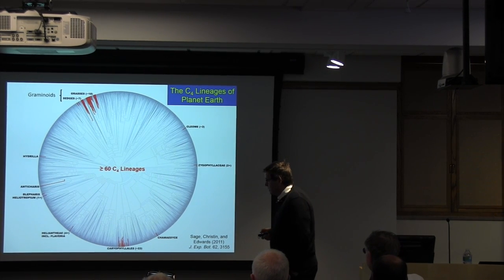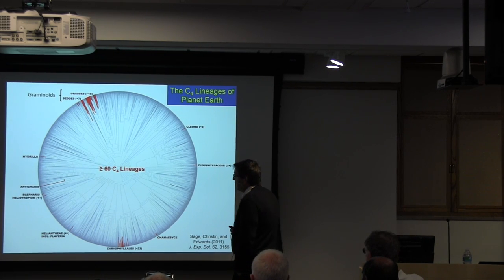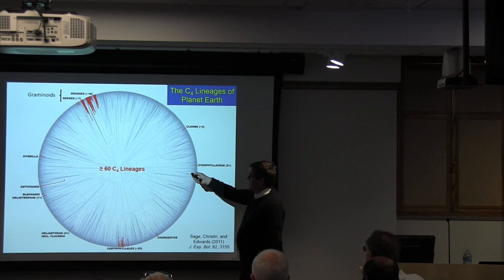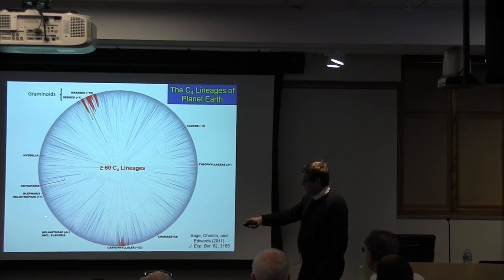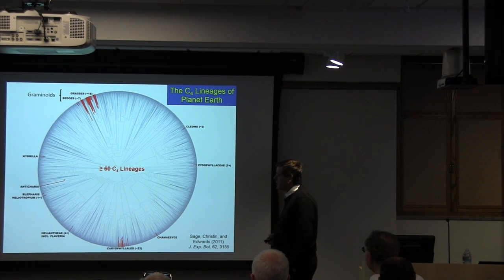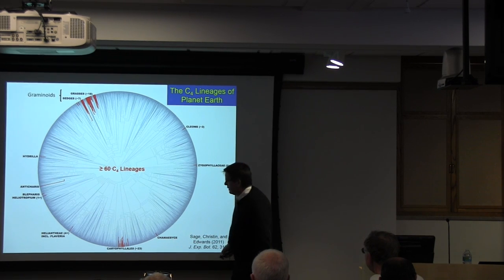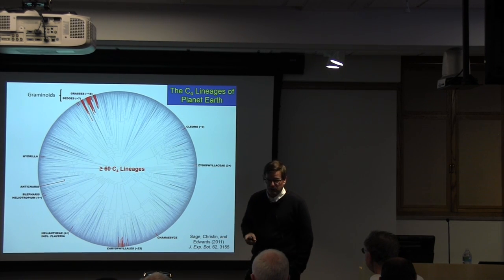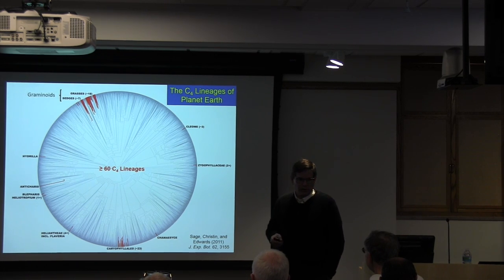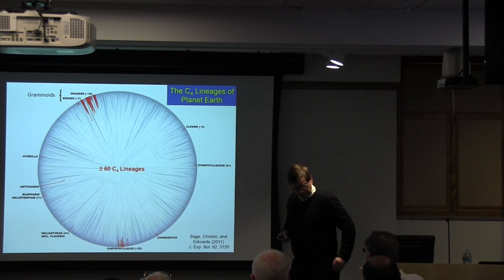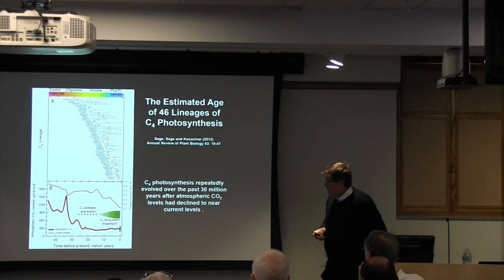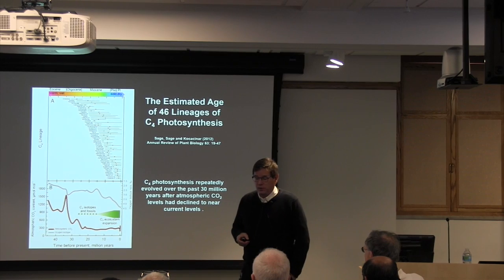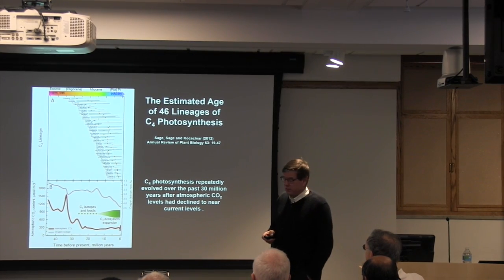Between our efforts and others in the field, we've come up with a pretty good map of C4 evolution in higher plants. There's a cluster in the grasses and sedges—collectively the graminoids—a cluster in the Caryophyllales order, and then a number of scattered groups of varying sizes in the angiosperms. When we look carefully, we can identify over 60 independent lineages of C4 evolution, which is kind of surprising given that it's a fairly complex trait. Using phylogenies, we can also apply a molecular clock approach to estimate when C4 evolved in these distinct lineages.